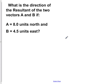What is the direction of the resultant of the two vectors A and B if A equals 8 units to the north and B equals 4.5 units east?